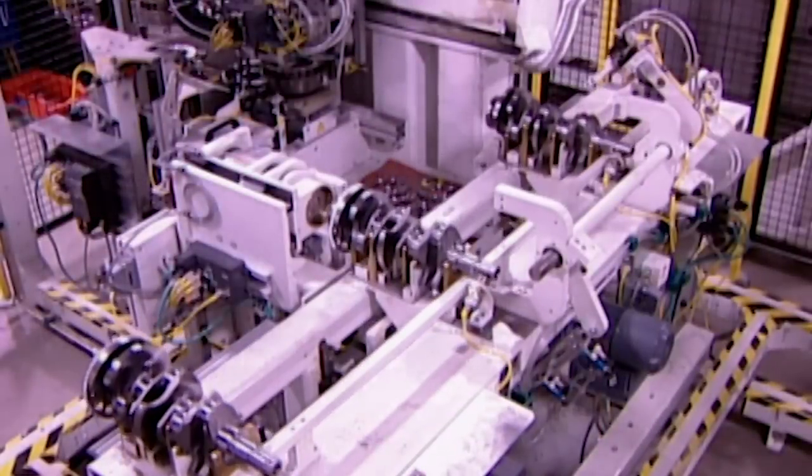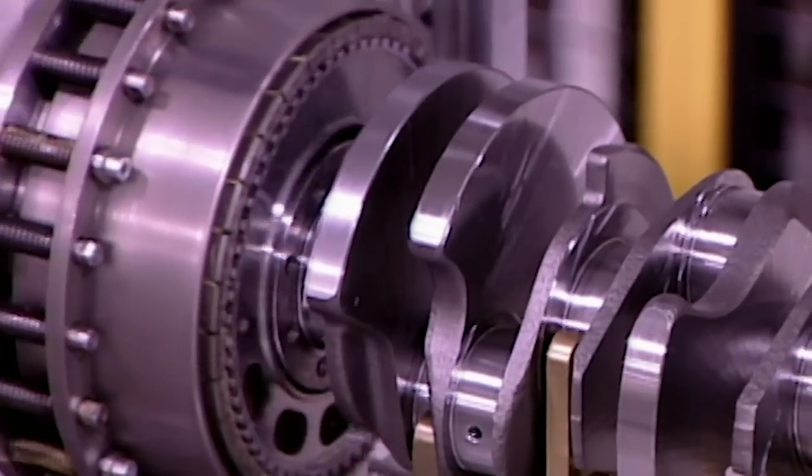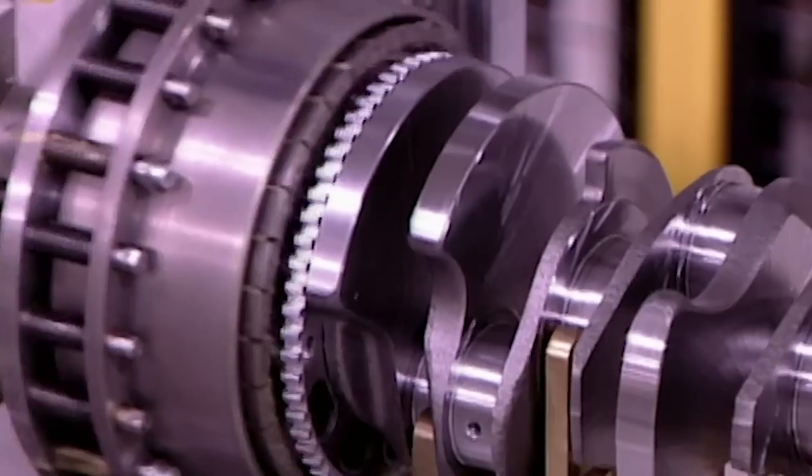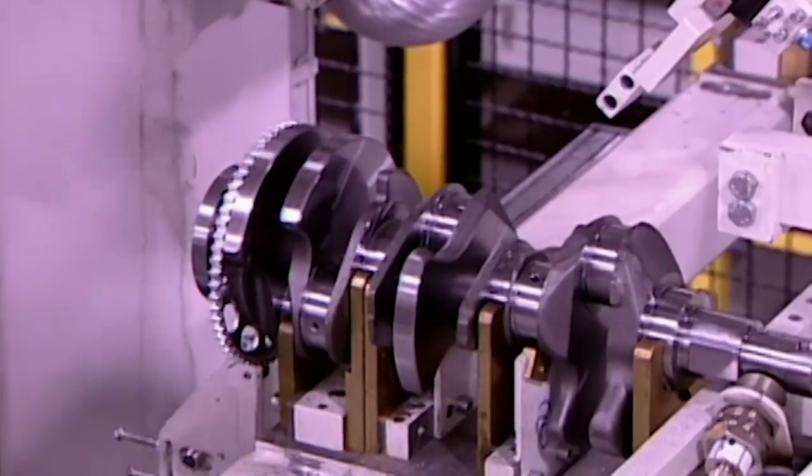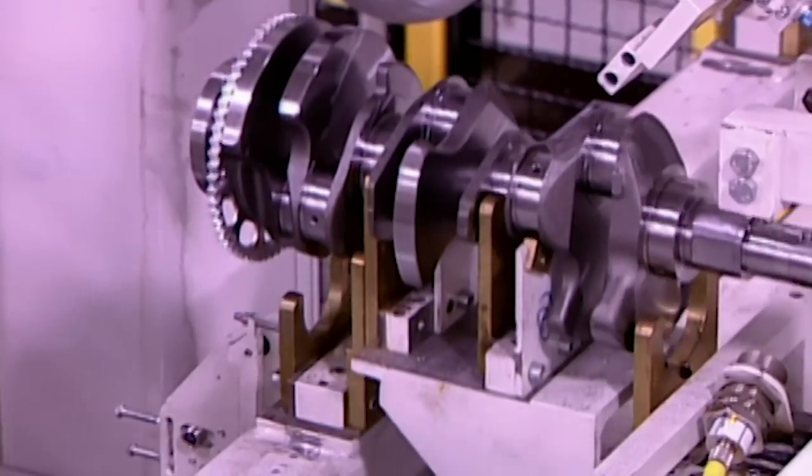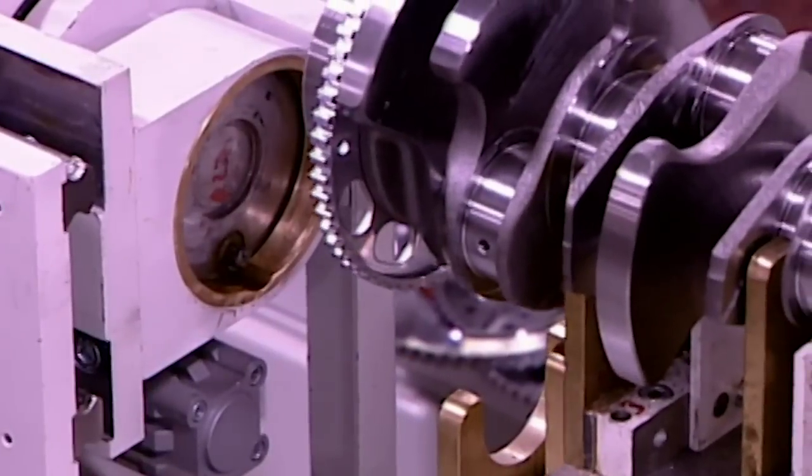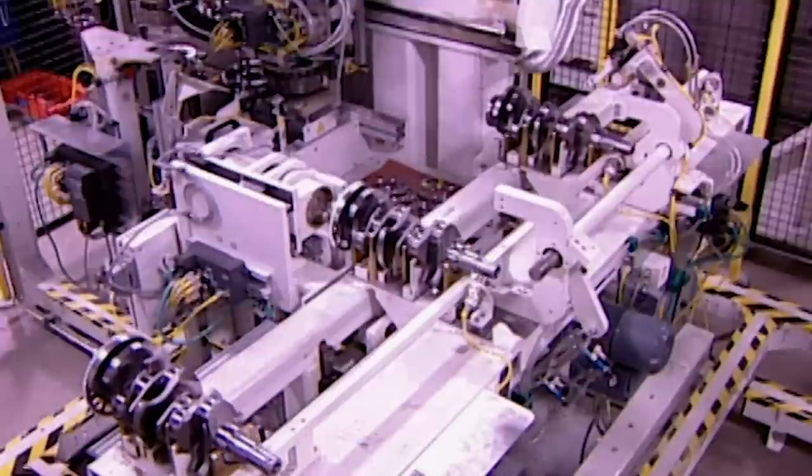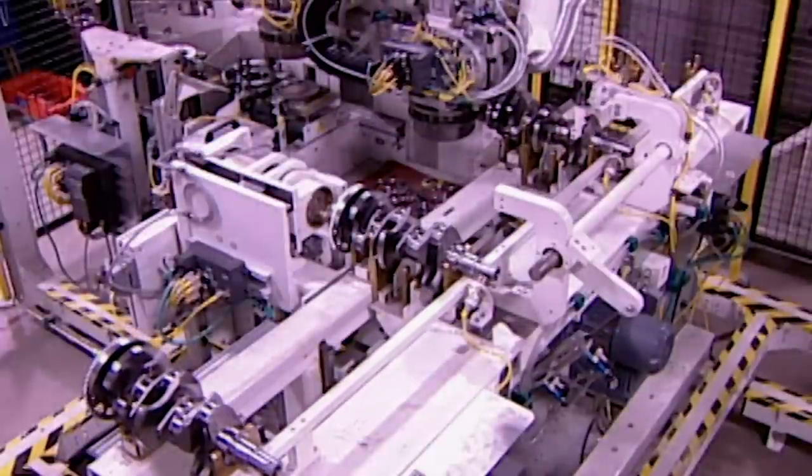Next, a steel disc with teeth, called the reluctoring, is installed. It's heated and pressed onto the crankshaft. As it cools, it shrinks to a tight fit. This ring helps time the combustion cycle. As it spins, its teeth pass in front of a sensor which reads the crankshaft's position and tells the engine to fire the spark plug at precisely the right moment.